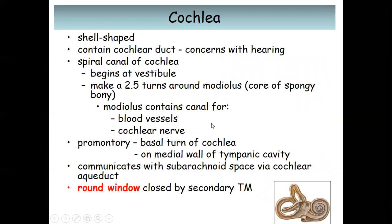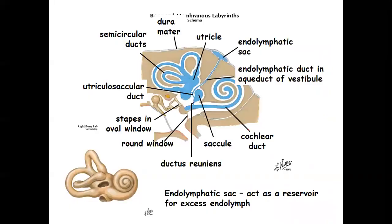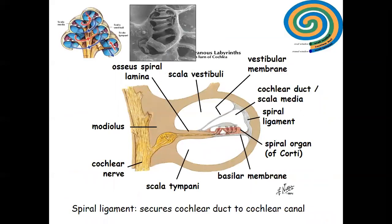The cochlea is a shell-shaped structure. It contains the cochlear duct, which is important for hearing. The spiral canal of the cochlea begins at the vestibule and makes 2.5 turns around the modiolus. The modiolus is in the middle, a core of spongy bone that contains canals for blood vessels and the cochlear nerve. The cochlea communicates with the subarachnoid space via the cochlear aqueduct. The round window is closed by the secondary tympanic membrane.